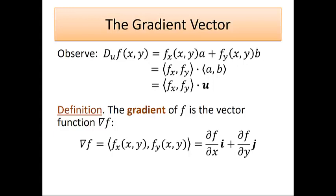The gradient vector of f is the vector function whose components are given by the partial derivatives of our function. Our notation for the gradient is this upside-down triangle: ∇f. This gives us a nice shorthand notation — we can find the directional derivative by taking the dot product of the gradient of f with the unit vector u.